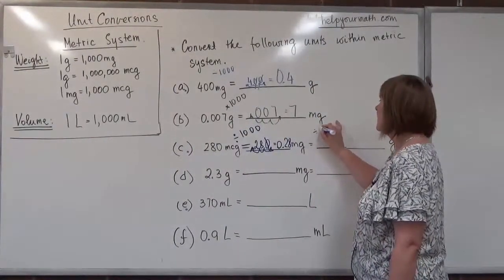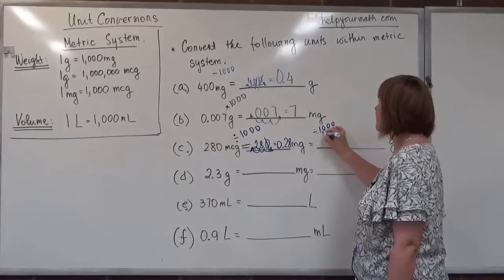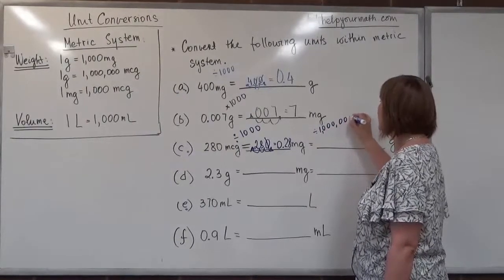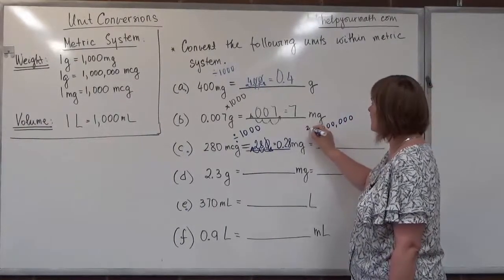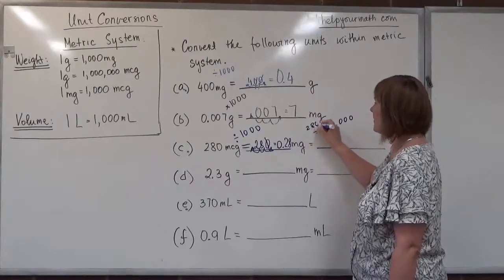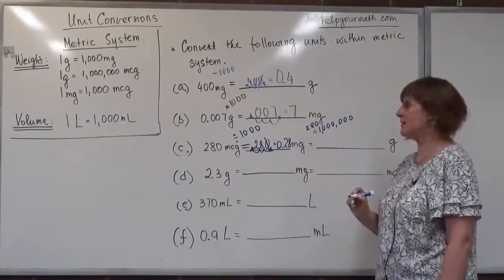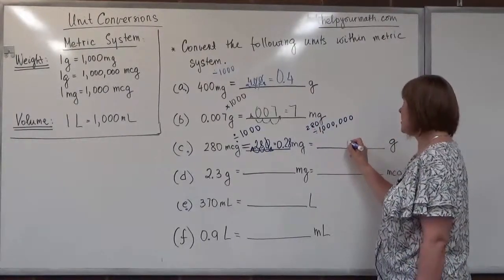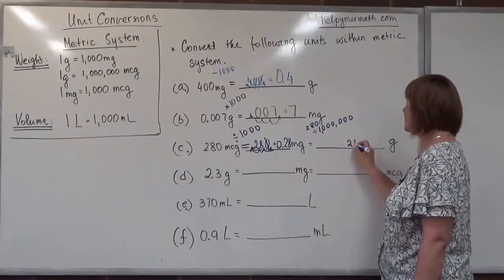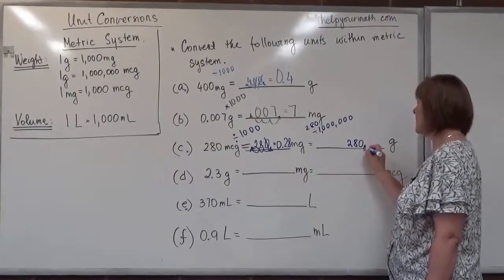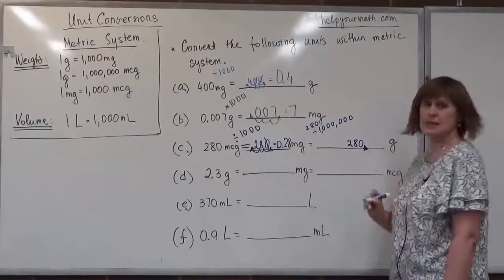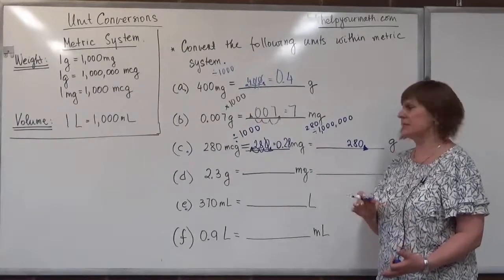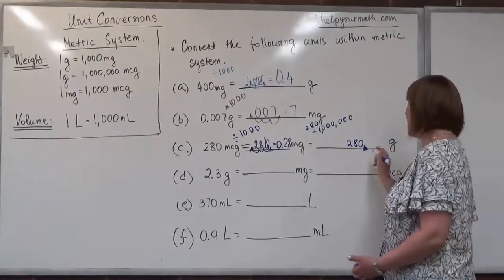We take the initial number 280 micrograms, drop the decimal point at the end of the whole number, and count six places to the left.